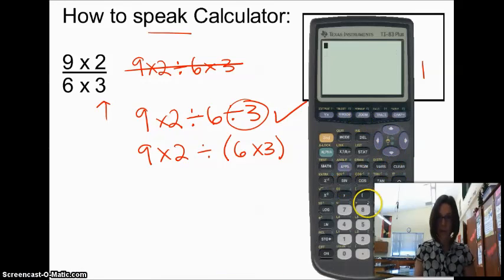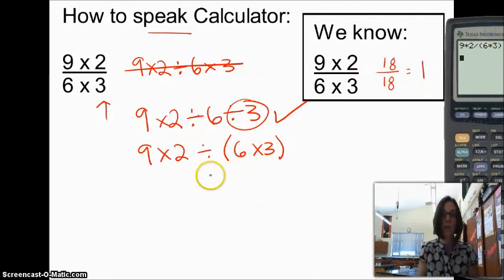Let's clear this off the screen. We would have 9 times 2 divided by, and then parentheses, 6 times 3. And we're going to get 1. So we just have to know how to tell the calculator where the numbers are located.